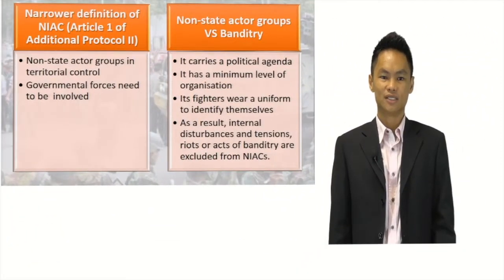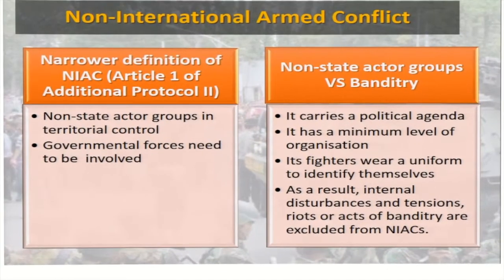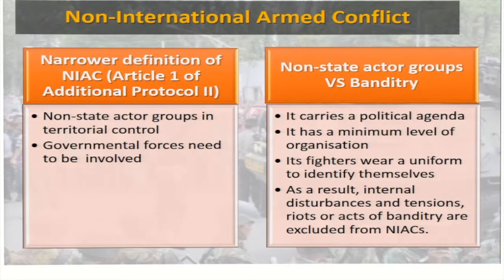Let us further examine what is a non-international armed conflict. Article 1 of Additional Protocol II 1977 provided a narrow definition of a non-international armed conflict. It involves non-state actor groups with territorial control, and governmental forces need to be involved for a conflict to be considered a non-international armed conflict.